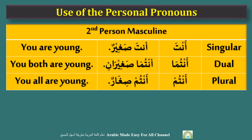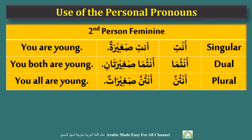For second person masculine: anta saghirun (you are young), antuma saghirani (you both are young), antum sigharun (you all are young). For second person feminine: anti saghiratun, antuma saghiratani, antunna saghiratun — you are young, you both are young, you all are young. You can see that singular, dual, and plural forms match between pronoun and predicate, and for feminine the taa marbuta marker is used.